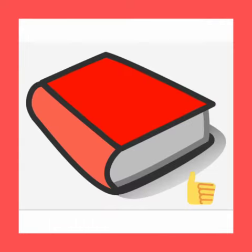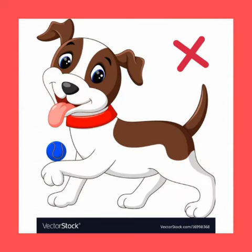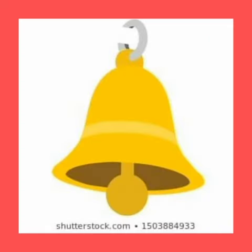Is this a book? Yes, this is a book. Whereas no is an act of refusing or denying. For example: Is this a cat? No, this is a dog. Is this a pot? No, this is a bell.